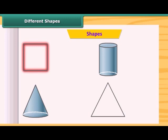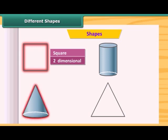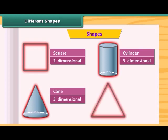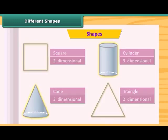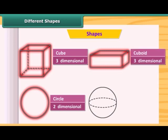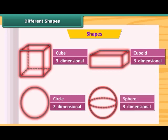This is square and this is two-dimensional. This is a cone and is three-dimensional. This is a cylinder, also three-dimensional. This is a triangle and this is two-dimensional. Circle, two-dimensional. This is a cuboid and is three-dimensional. And this is, is it a sphere? Yes, this is a sphere and is three-dimensional.